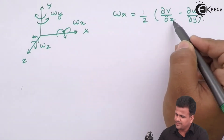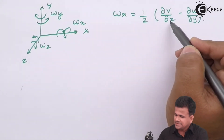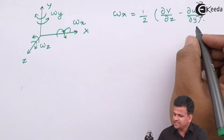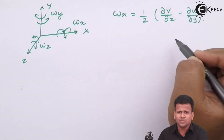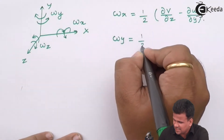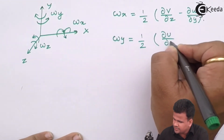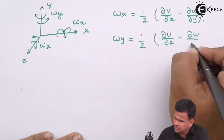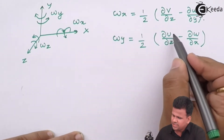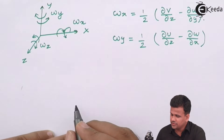Omega_x is equal to half of (∂v/∂z − ∂w/∂y), where ∂v/∂z means the change in y-velocity with respect to the z-axis, and ∂w/∂y means the change in velocity along the z-axis with respect to the y-axis. Similarly, omega_y is equal to half of (∂u/∂z − ∂w/∂x) — this is the change in velocity along the x-direction with respect to z, minus velocity along the z-direction with respect to x.